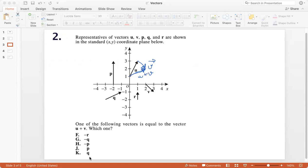And you have these options, minus r, minus q, minus p, p and q. Now, if you notice vector q, vector q seems to be the same length as u plus v and also has the same direction. So vector u plus vector v is simply going to be vector q.